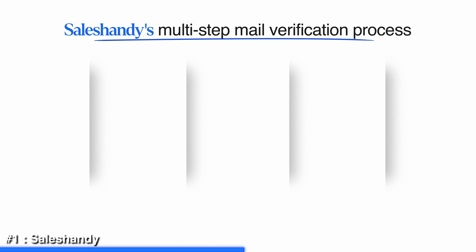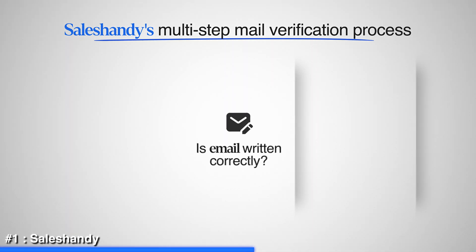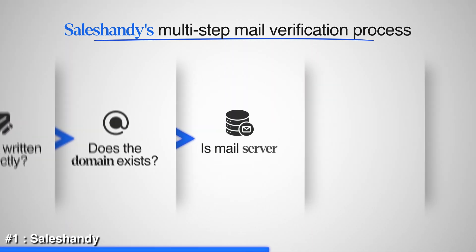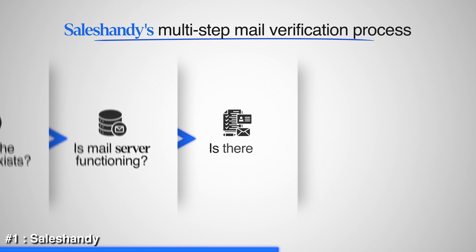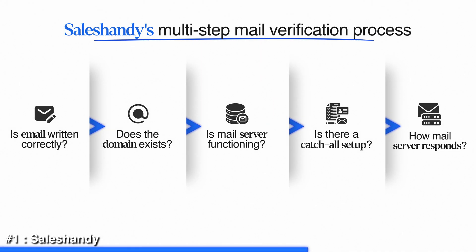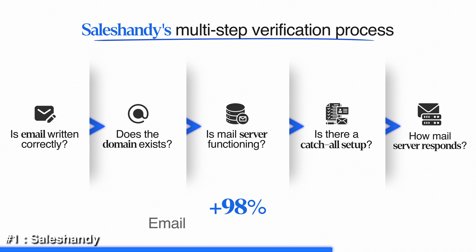SalesHandy uses a multi-step verification process to check if an email is valid and safe. It examines aspects such as whether the email is written correctly, if the domain exists, if the mail server is functioning, whether the email is part of a catch-all setup, and even tests how the mail server responds — all in real time. This level of in-depth verification makes the 98-plus percent accuracy claim a lot more believable.